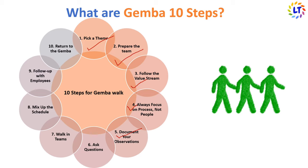Sixth, ask questions — ask employees why they do things the way they do; you can ask what, when, where, why, and who. Seventh, work in teams — including leaders from different areas of the organization can provide another point of view. Eighth, mix up the schedule — perform Gemba Walks at different times of day and week to get a good sense of what is happening. Ninth, follow up with employees — discuss what you learned and communicate next steps. Tenth, return to the Gemba — if changes have been implemented, return to observe and verify the changes before moving forward.